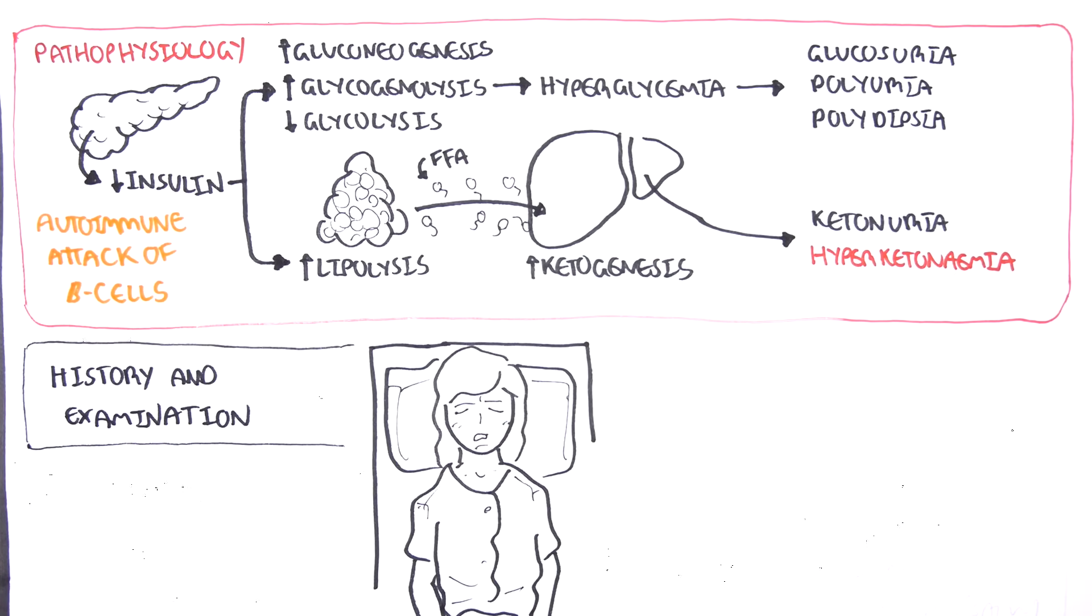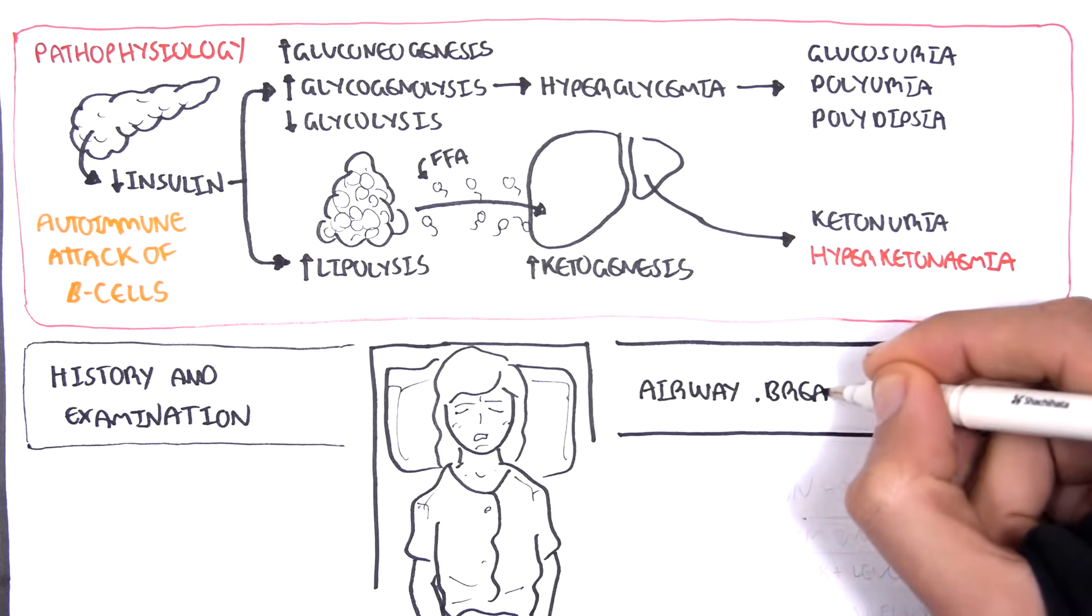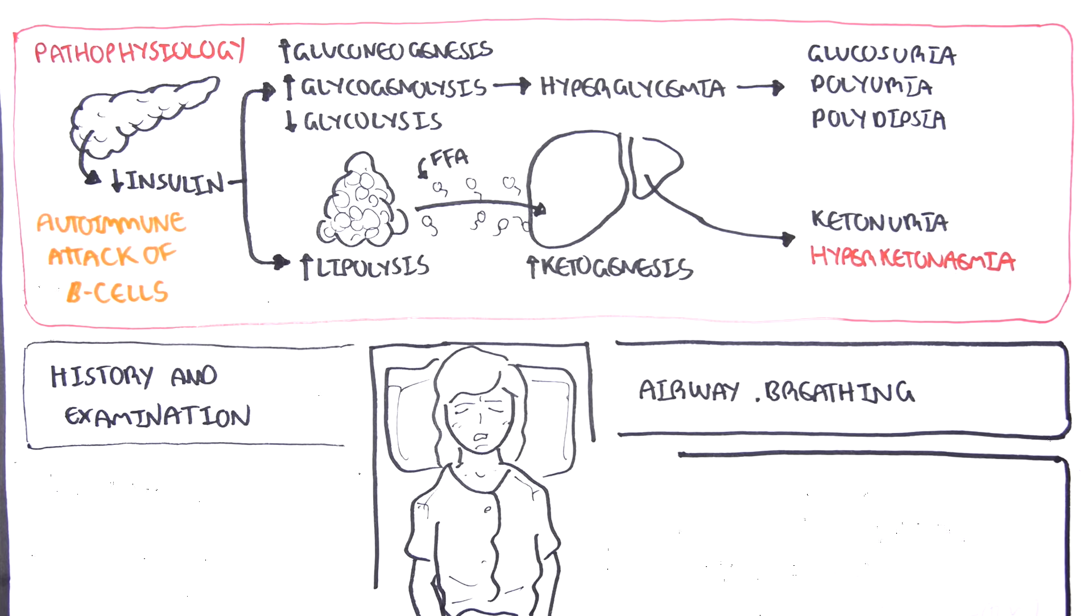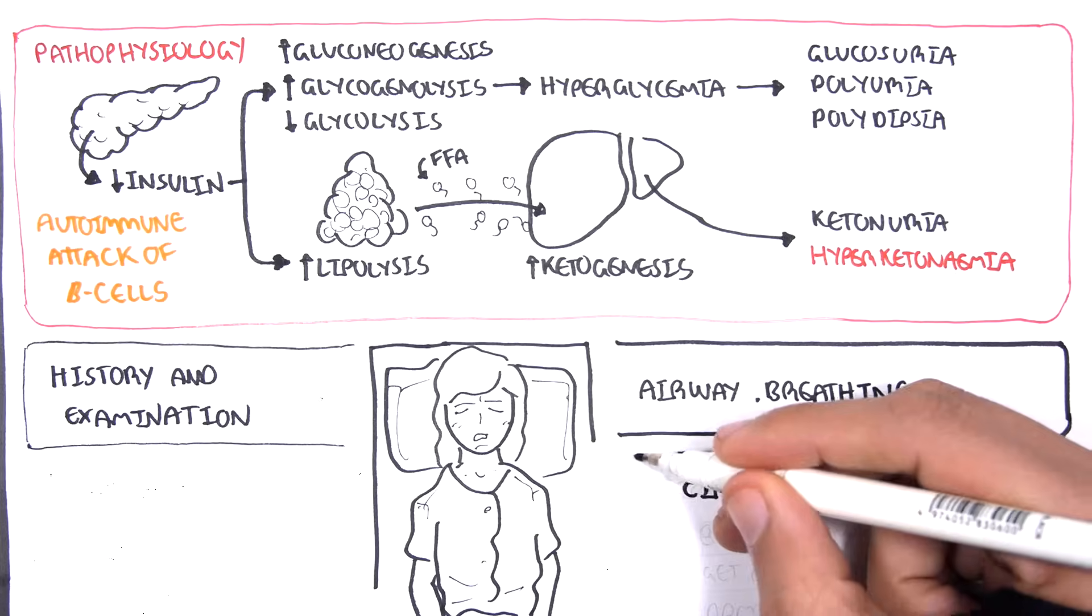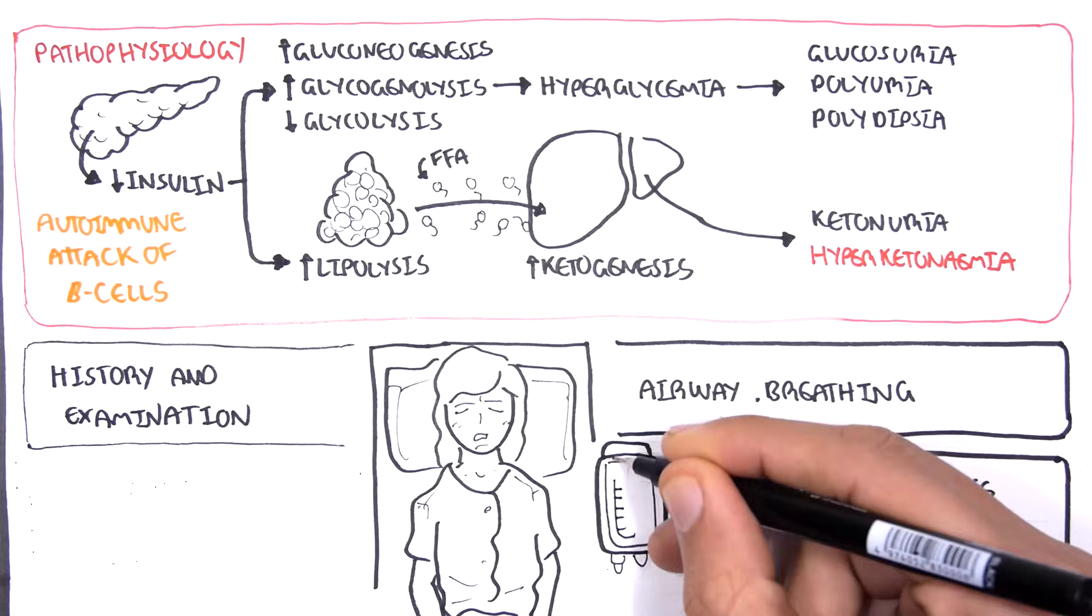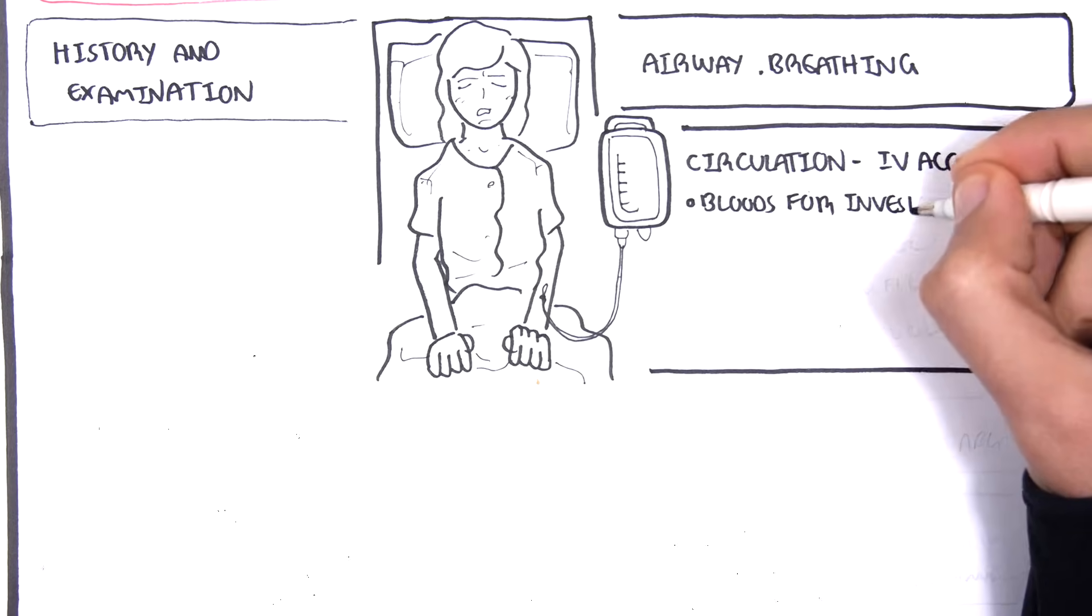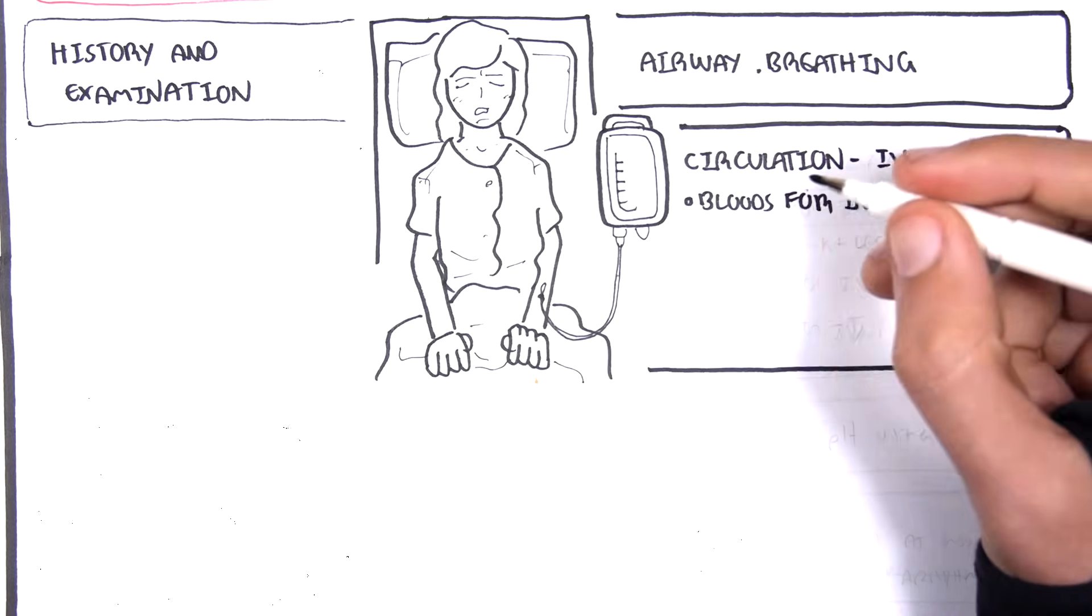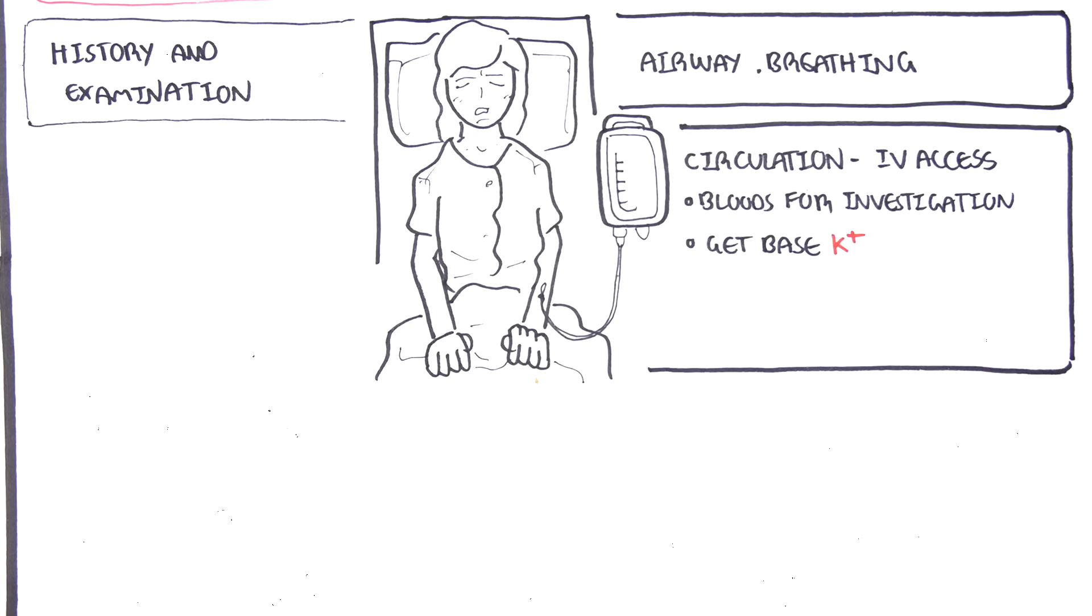And appropriate management needs to be performed, which includes checking the airways, checking breathing, and circulation. In circulation, IV access is important for a few reasons. First, to get bloods for investigation.